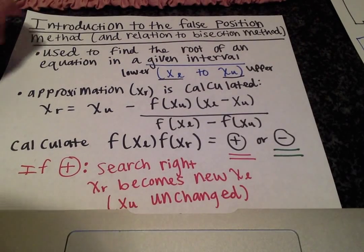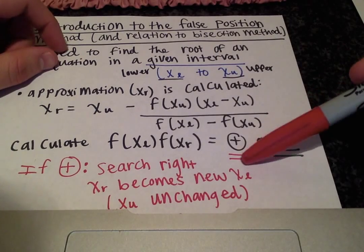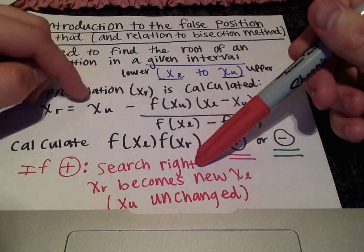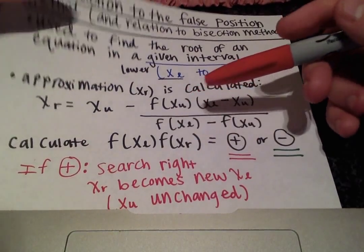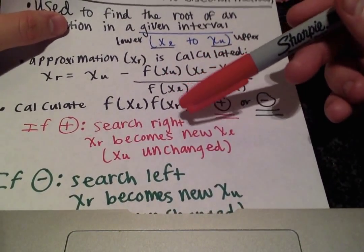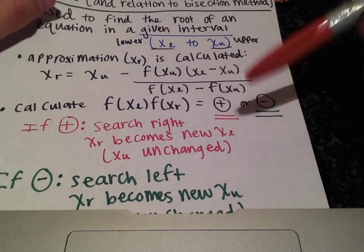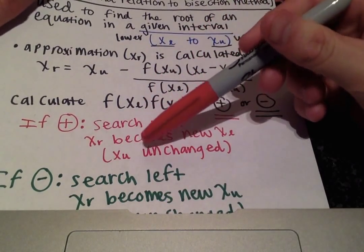So let's look at the positive case. Notice if the product is a positive value then you'll search to the right, or in other words, your x_r value will become your new lower limit and the upper limit will remain unchanged.